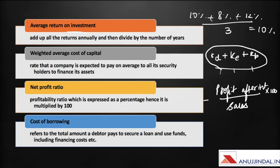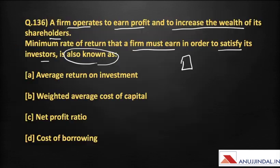Then we have the cost of borrowing, which refers to the total amount a debtor pays to secure a loan and use funds. For example, if Ram takes a loan from Sham, Ram has to pay the principal amount as well as the interest — that is the cost of borrowing for Ram. The answer to this question is weighted average cost of capital, because this is the minimum rate of return a firm earns to pay to its debt holders, equity shareholders, or preference holders in order to satisfy them.